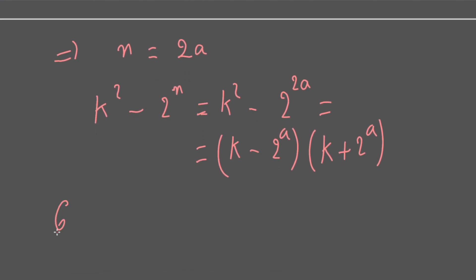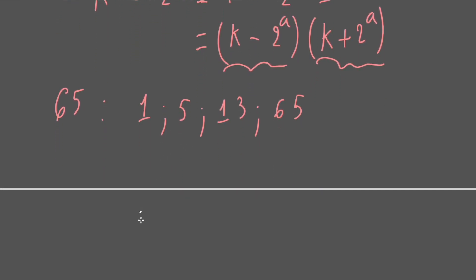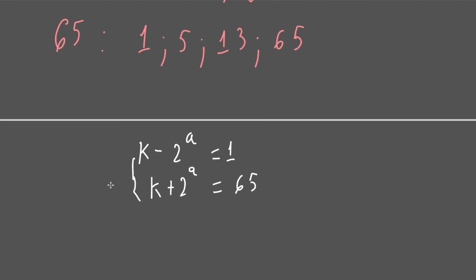Then we have 65 have 4 positive factors that is 1, 5, 13 and 65. Obviously this number is positive integral as well. Then we just replace them 1 by 1 by k - 2^a = 1 and k + 2^a = 65, and we have another is k - 2^a = 5 and k + 2^a = 13.